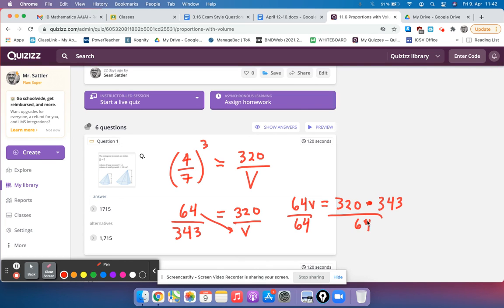So now I can just type this into my calculator, 320 times 343, and then divide by 64. And it comes out to be 1,715 exactly.